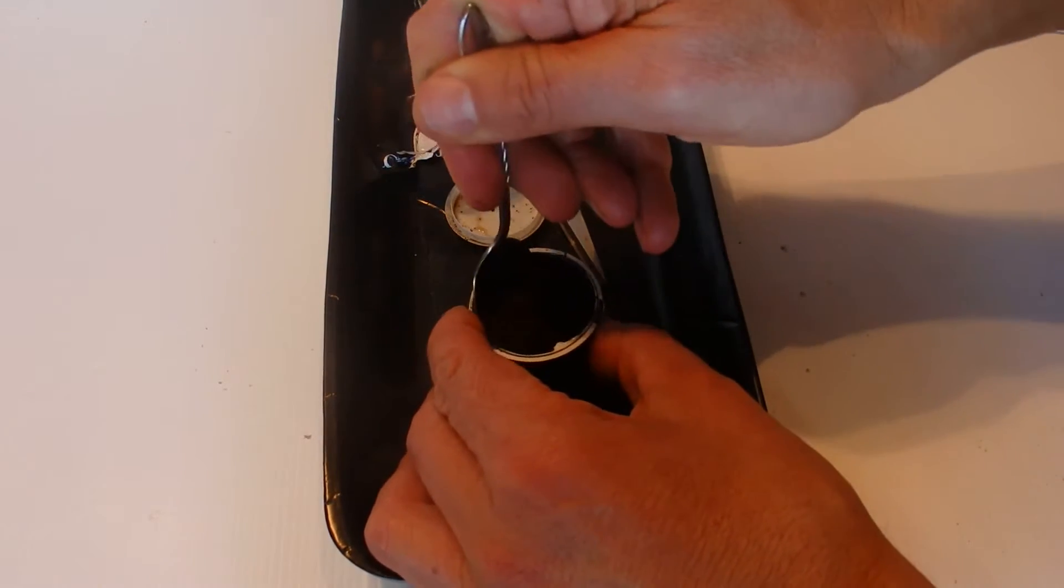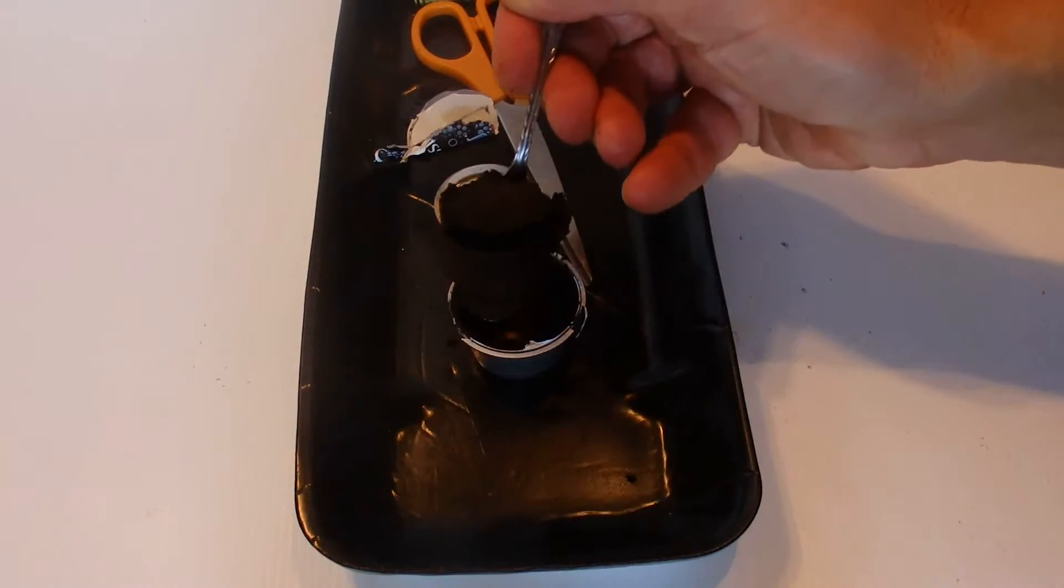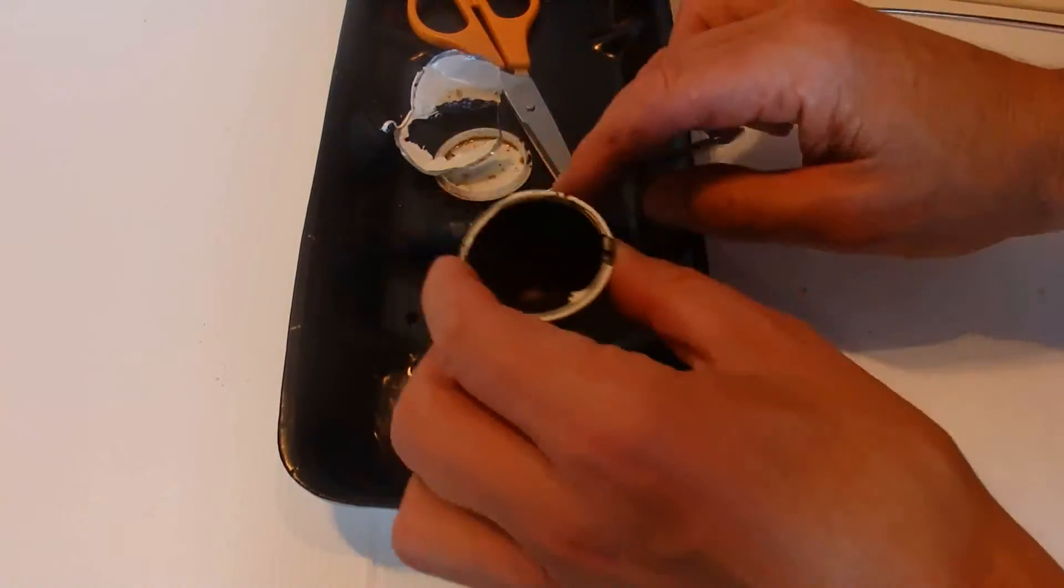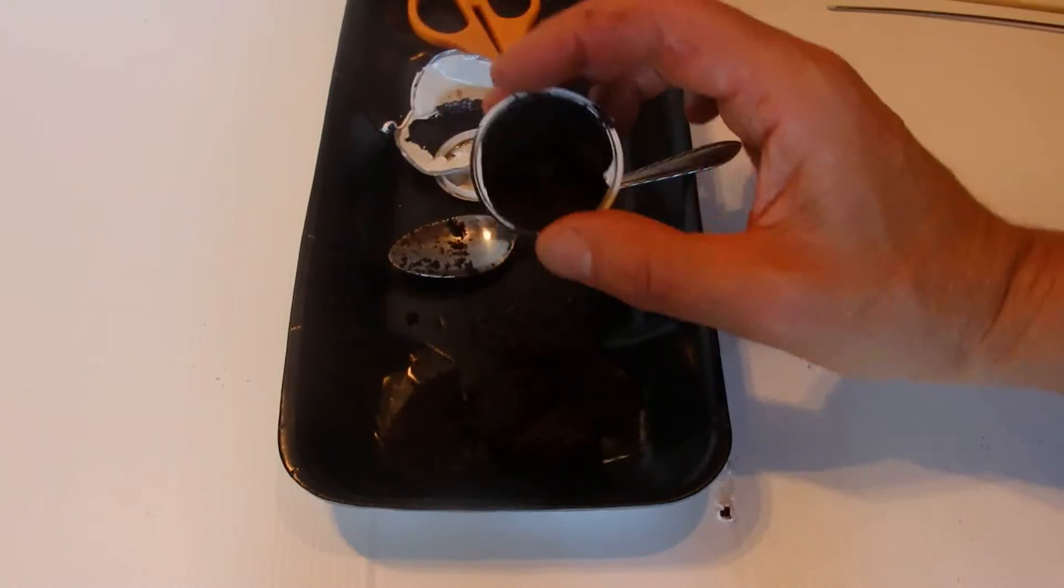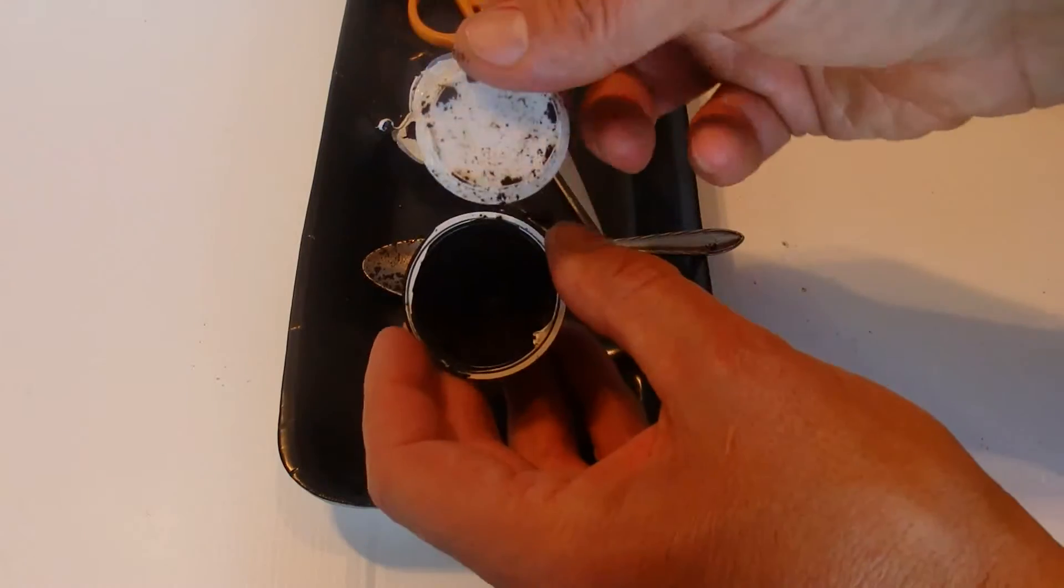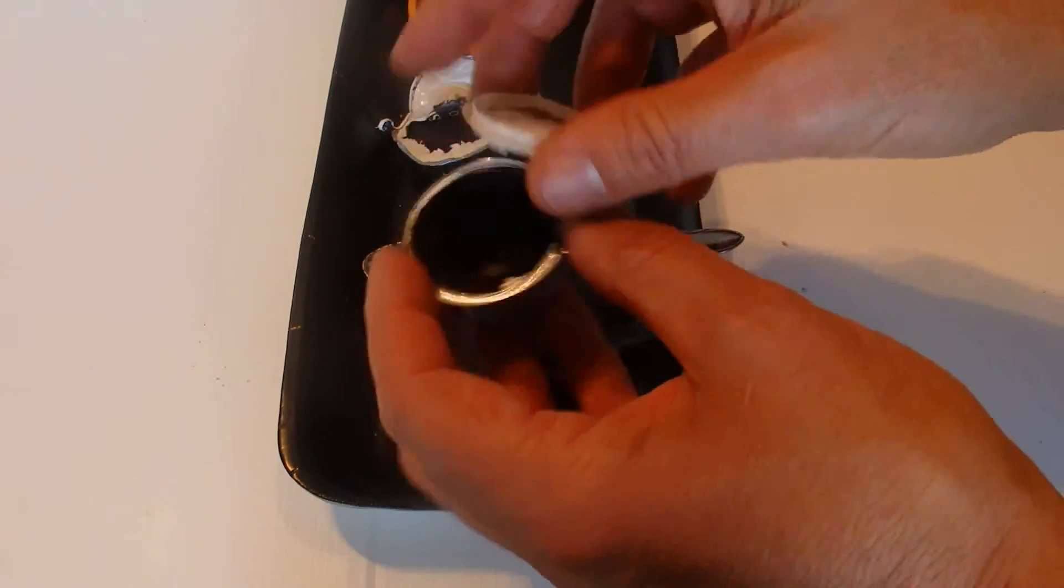Then all you have to do with your spoon is just scoop out all your coffee grounds out of your pod. You can put that on the garden if you like to make your plants go really big and healthy. With the coffee pod and the little white piece, give those a good wash out and dry them.